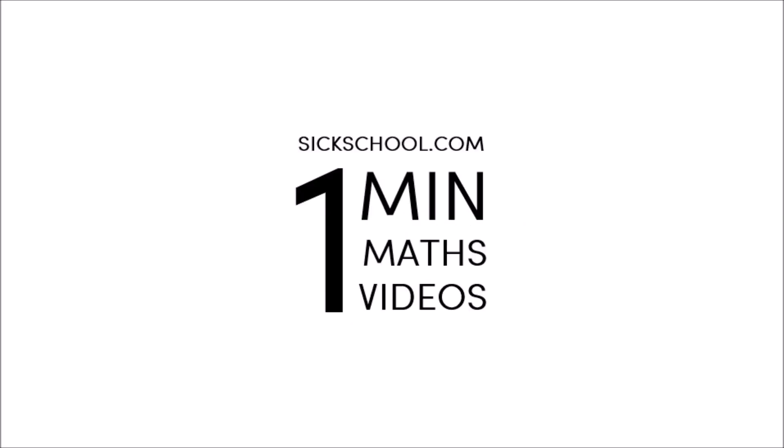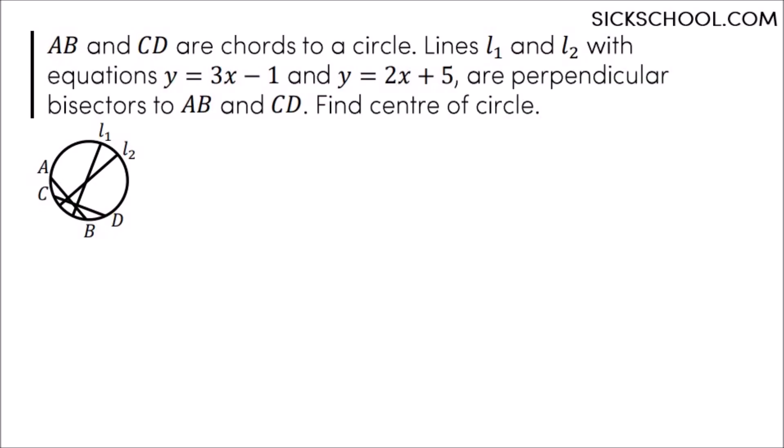Love for all, hatred for none. SickSchool.com one minute maths videos. The challenge: you have two chords AB and CD, each with a perpendicular bisector l₂ and l₁. Find the center. As these are perpendicular bisectors of chords, they both go through the center.